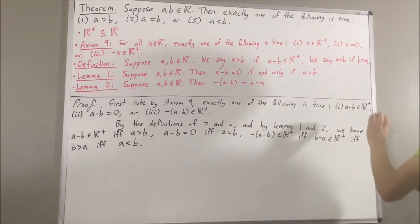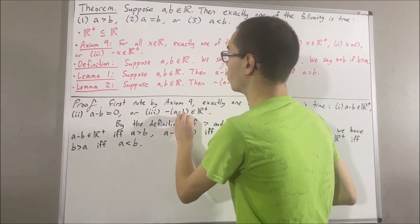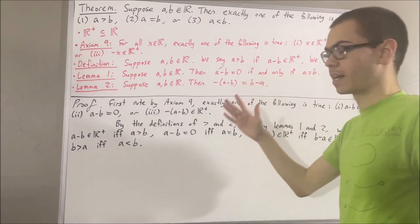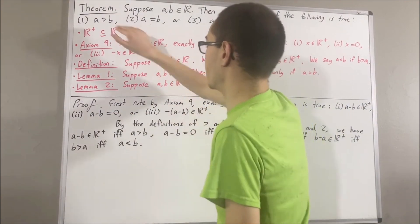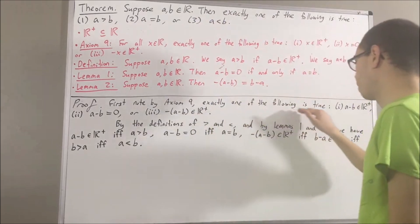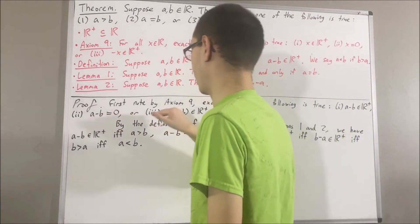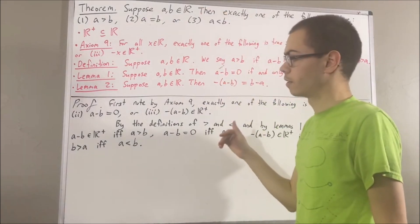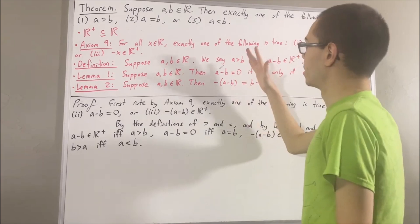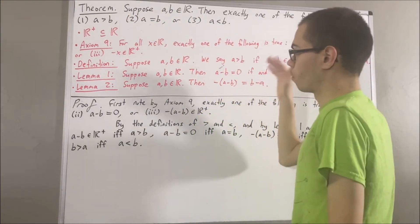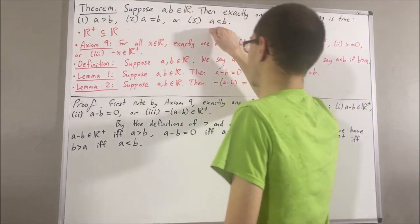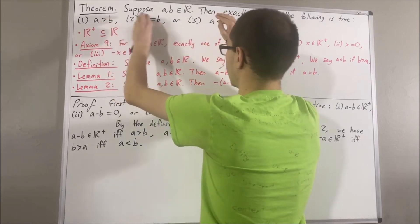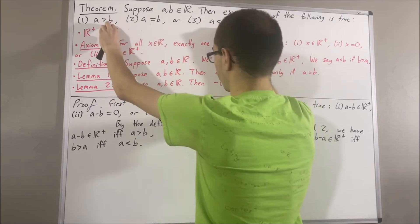So, putting this all together, we have shown three equivalences: a minus b positive is equivalent to a greater than b; a minus b equals zero is equivalent to a equals b; and negative of a minus b positive is equivalent to a less than b. To show exactly one of the following is true, we will first show that a is greater than b, or a equals b, or a is less than b; and then show it cannot be the case that a is greater than b and a equals b, that a equals b and a is less than b, or that a is greater than b and a is less than b.